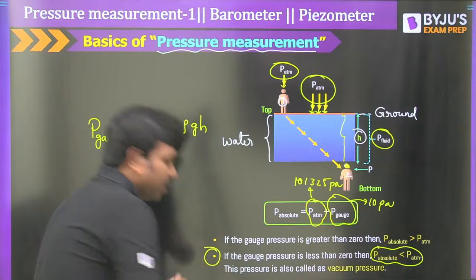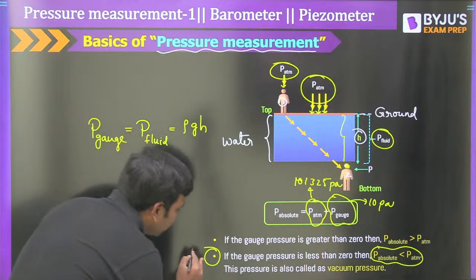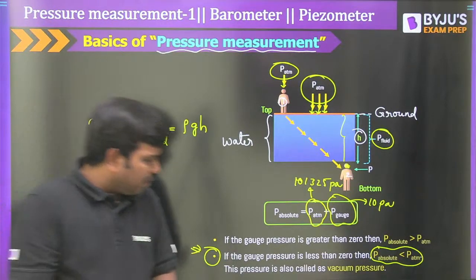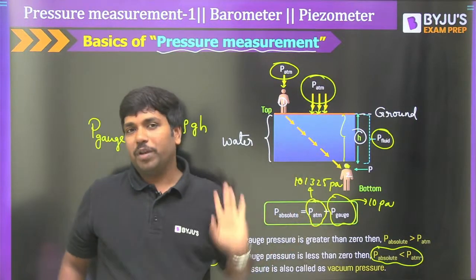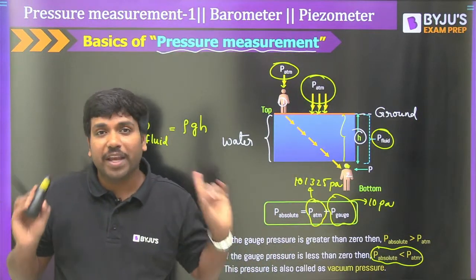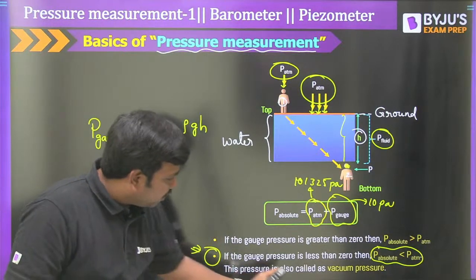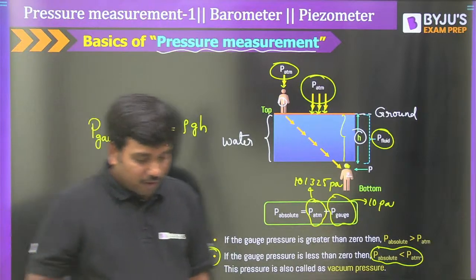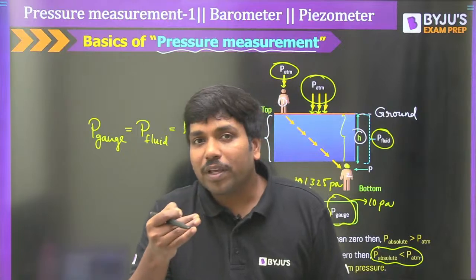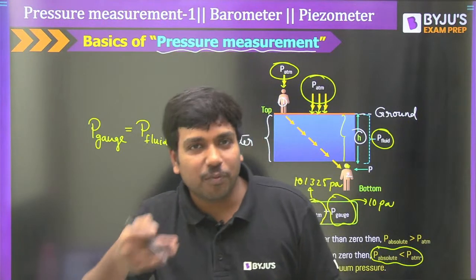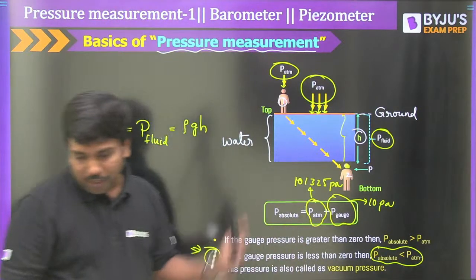This condition is also called vacuum pressure. Whenever you are measuring vacuum pressure, you will get a negative value for gauge pressure. When you get a negative gauge pressure, inherently the absolute pressure will be less than atmospheric pressure. Even in space, when astronauts travel, the pressure is very, very less — that is vacuum pressure, considered as negative pressure because absolute pressure is less than atmospheric pressure.